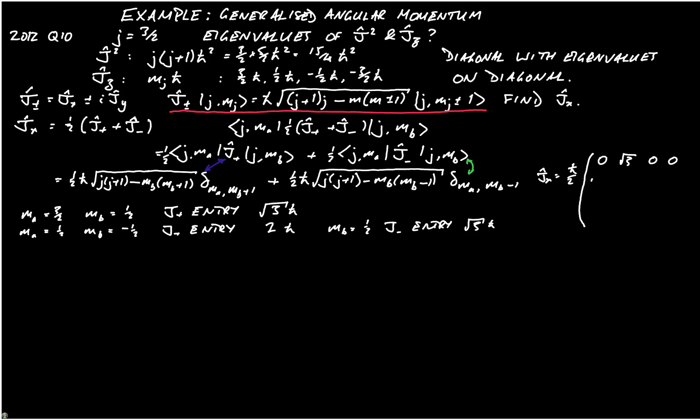We're going to have root 3, 0, 2, 0. We're going to have 0, 2, 0, root 3. And we're going to have 0, 0, root 3, 0.